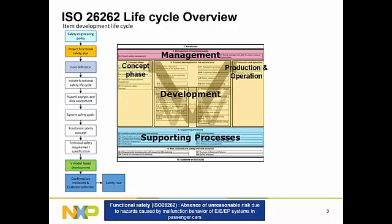We also have a production operation phase where production control and related items are addressed. If you see the overall lifecycle, it starts with safety culture at an organizational level, and at a project level we need a safety plan to start with. We then begin with safety analysis or risk assessment to see what safety requirements need to be met. This yields a set of technical safety requirements that will be implemented, verified, validated through a standard V model-based development. At the end, we have confirmation measures to make sure we meet the safety goals, in the form of a safety case.